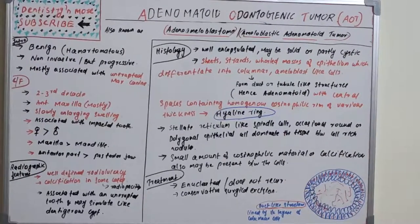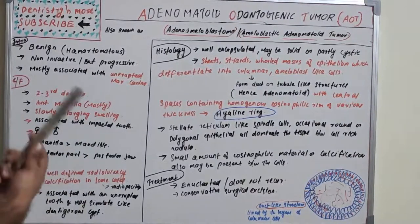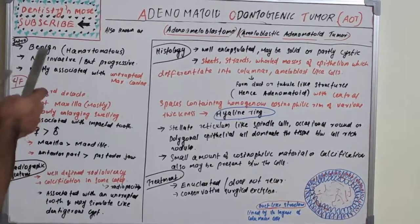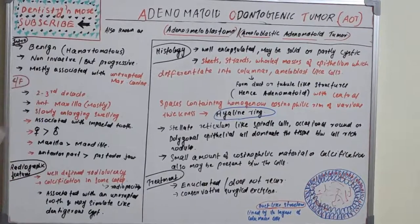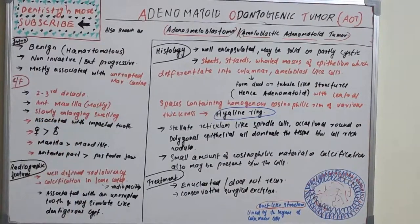AOT — Adenomatoid Odontogenic Tumor — is benign in nature and a non-invasive but progressive lesion, which is most commonly associated with an unerupted maxillary canine. It is also described as a hamartomatous lesion — a disorganized growth mimicking a neoplasm.